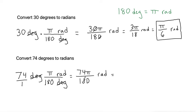From here, we want to see if we can simplify this fraction. Well, both the 74 and 180 are even, so anytime that you have an even number, you can divide it by 2 evenly. So 74 divided by 2 is 37, so the numerator would go to 37π, and 180 divided by 2 is 90.